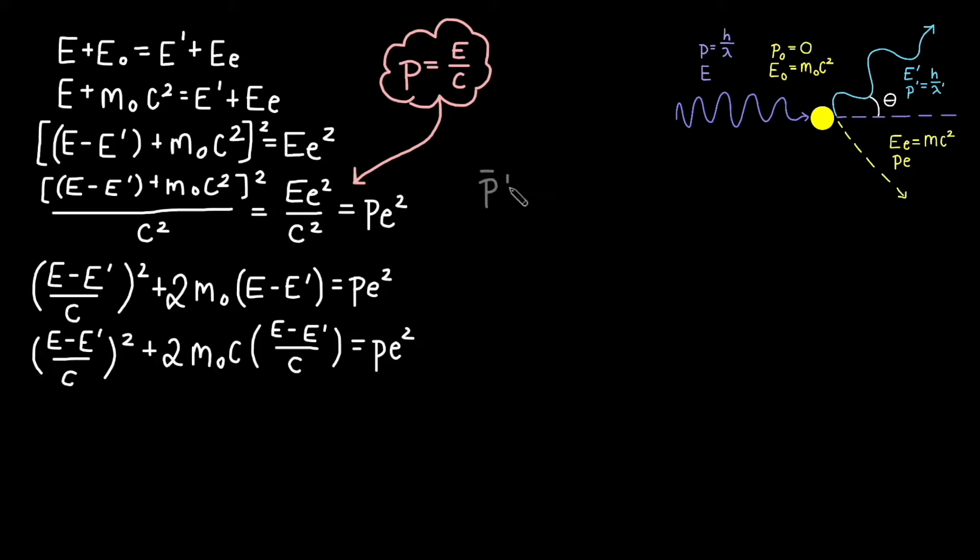The conservation of momentum implies the momentum of the photon and the electron before collision is equal to the momentum of the photon and the electron after collision. We haven't yet focused on how the momentum is a vector, meaning it has both a value and a direction, but that becomes important here.